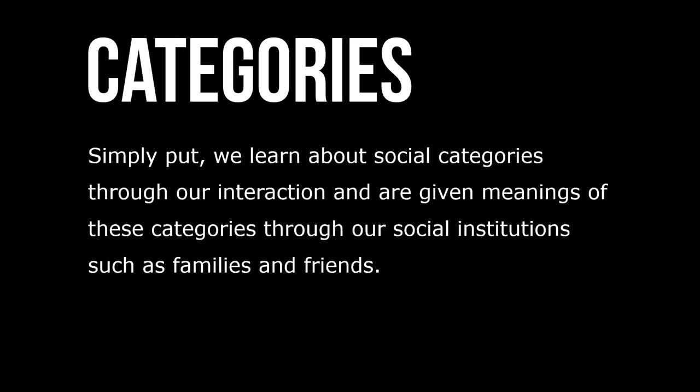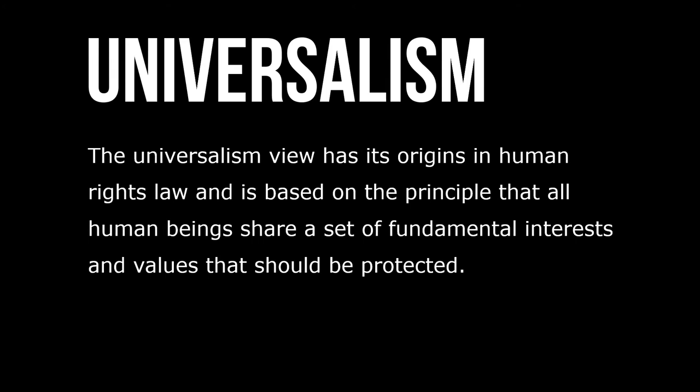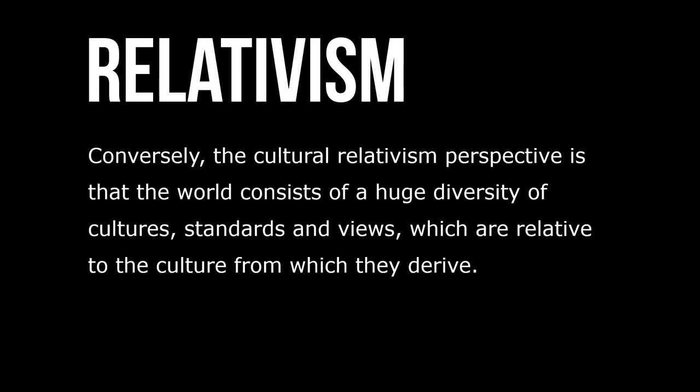Simply put, we learn about social categories through our interaction and are given meanings of these categories through our social institutions such as families and friends. The universalism view has its origins in human rights law and is based on the principle that all human beings share a set of fundamental interests and values that should be protected. Conversely, the cultural relativism perspective is that the world consists of a huge diversity of cultures, standards, and views which are relative to the culture from which they derive.